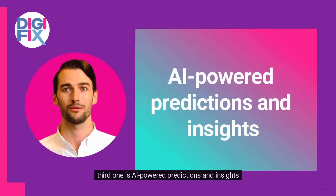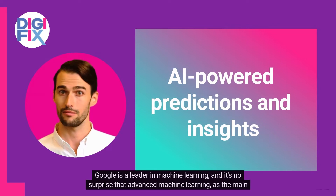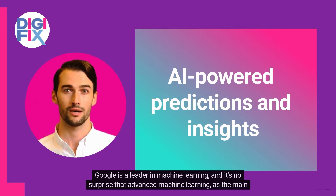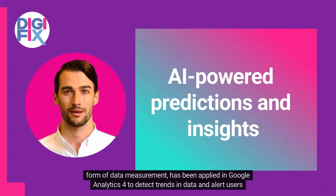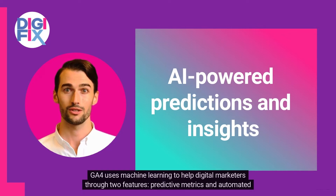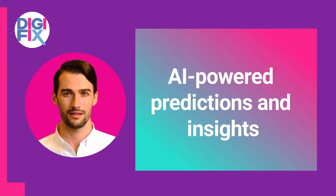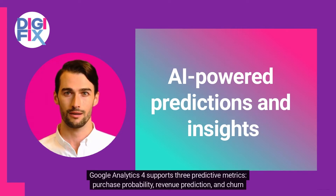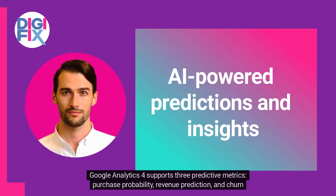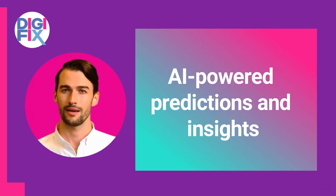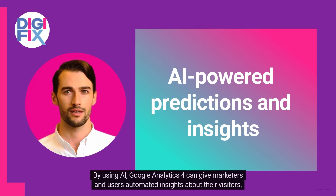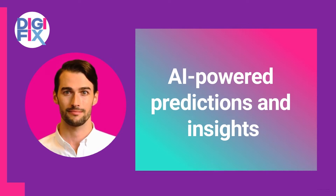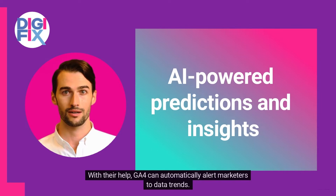The third change is AI-powered predictions and insights. Google is a leader in machine learning, and advanced machine learning — as the main form of data measurement — has been applied in Google Analytics 4 to detect trends in data and alert users about them. GA4 uses machine learning to help digital marketers through two features: predictive metrics and automated insights. Google Analytics 4 supports three predictive metrics: purchase probability, revenue prediction, and churn probability. By using AI, Google Analytics 4 can give marketers and users automated insights about their visitors, customers, and customer journeys, and can automatically alert marketers to data trends.